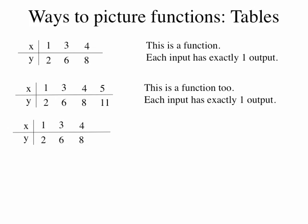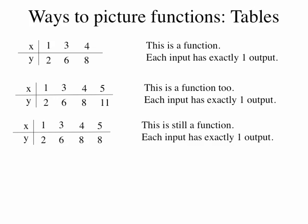What if I put in a 5 and get out an 8? Does this table still represent a function? It still does. It's okay for two different inputs to match to the same output, so both 4 and 5 could have an output of 8. It's still true that each input — 1, 3, 4, and 5 — has exactly one output that matches it. So this is still a function.